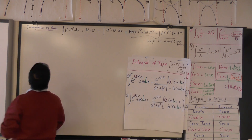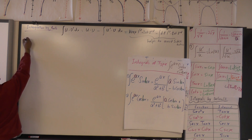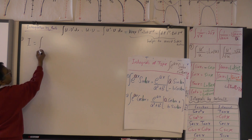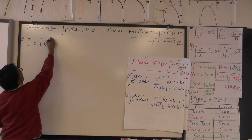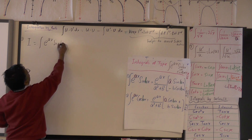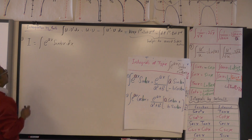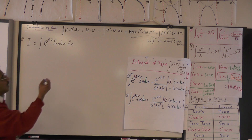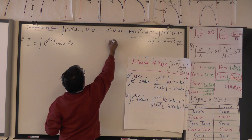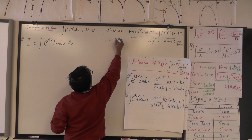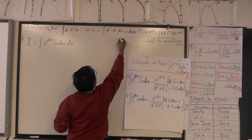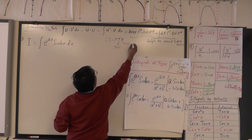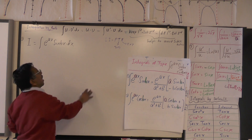Let me start with the first one. Call it I, which is the integral of e raised to ax times sine of bx. The order we choose is very important. As I showed earlier, it's best to use an orderly approach.